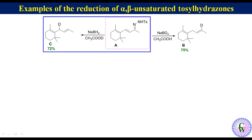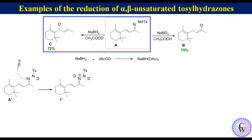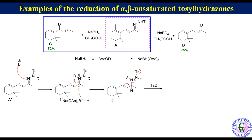Formation of compound C from A: NaBH4 reacts with deuterated acetic acid to produce sodium triacetoxyborohydride. Compound A in the presence of deuterated acetic acid gets deuterated at NH to give compound A'. A' gets protonated to produce species 1'. Due to positive charge on nitrogen, the C=N double bond is attacked by sodium triacetoxyborohydride. Hydride transfer produces species 2', which eliminates para-toluenesulfenic acid to produce diazene 3'. Diazene 3' undergoes 1,5-deuteride migration from nitrogen to carbon to generate compound C.